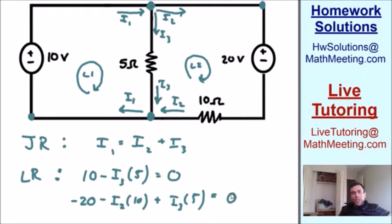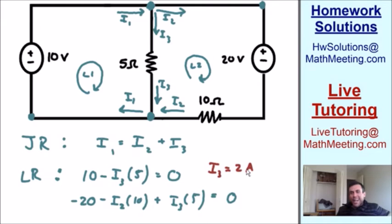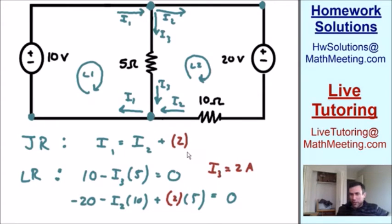Now we have a system of equations to solve for I1, I2, and I3. Most systems of equations are more difficult than this, so I recommend using a calculator or computer, but these are simple enough to do by hand. The second equation has only one unknown, so we can solve for I3 easily. Adding 5·I3 to both sides gives I3 equals 10 over 5, so I3 equals 2 amps. Since it's positive, we chose the right direction.